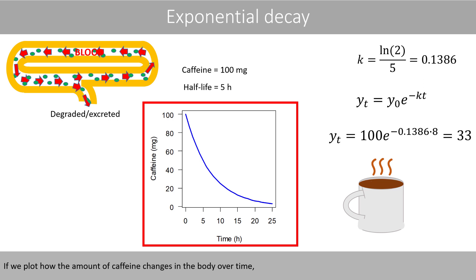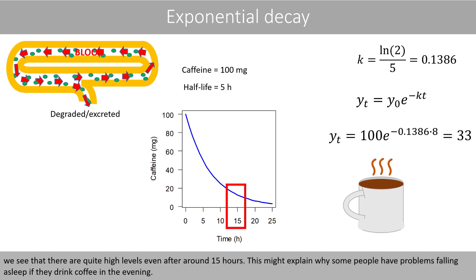If we plot how the amount of caffeine changes in the body over time, we see that there are quite high levels even after about 15 hours. This might explain why some people have problems falling asleep if they drink coffee in the evening.